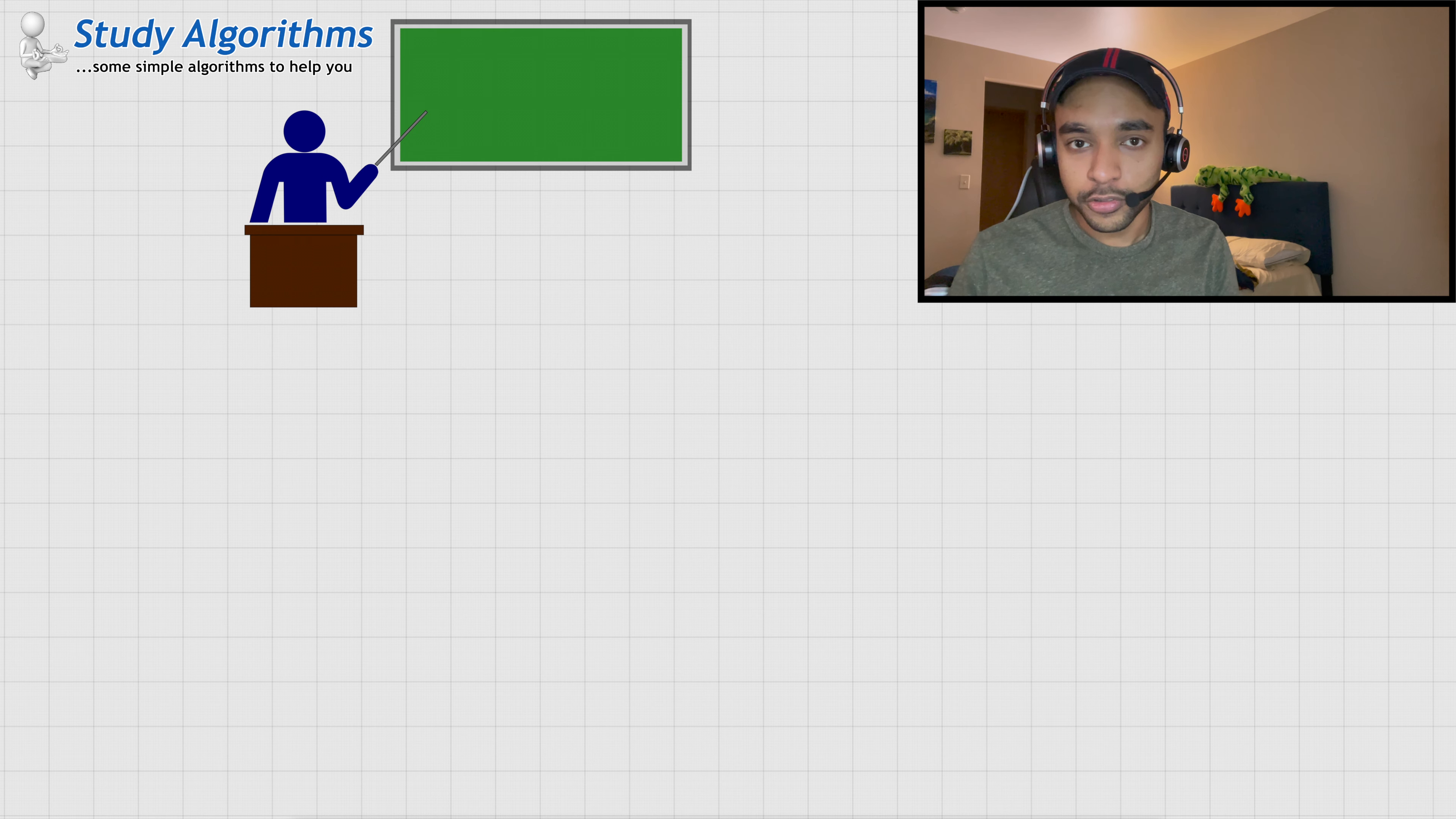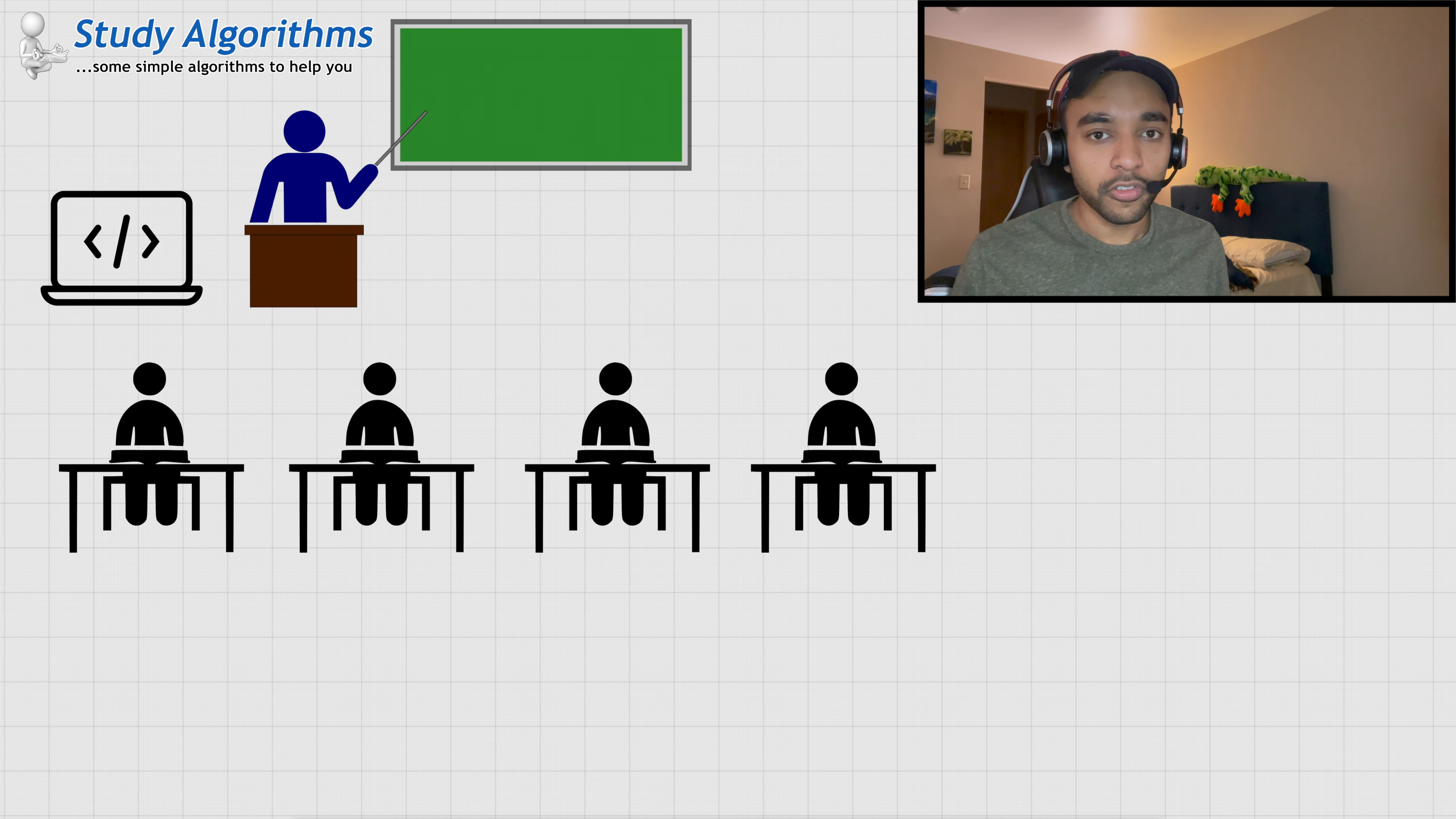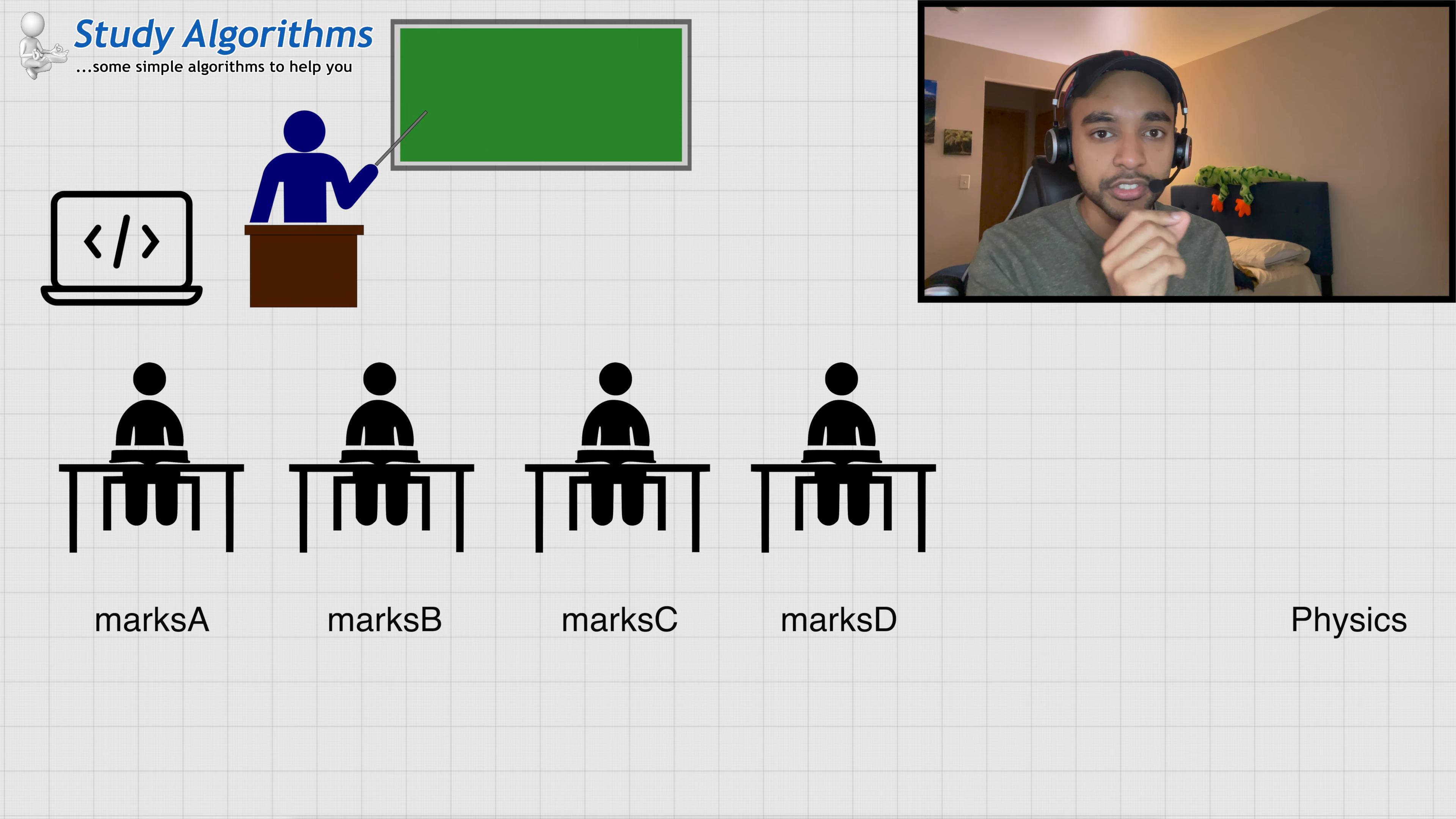Suppose you are teaching a class of four students, and side by side, you are also writing a piece of code that is maintaining the marks of all of these students. Let's say you are keeping a record of their marks in physics. So, you can have four variables like marks A, marks B, marks C, and marks D, where each of these variables are representing the marks of a student A, B, C, and D in the physics subject. Now, you can update these variables as and when required.